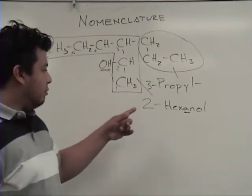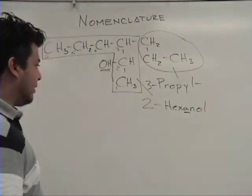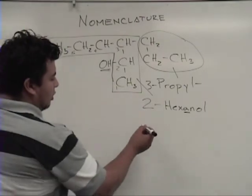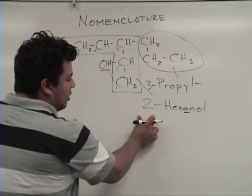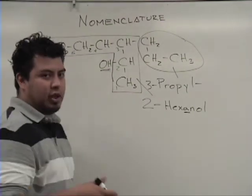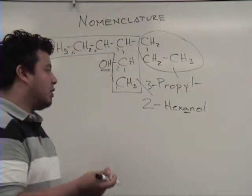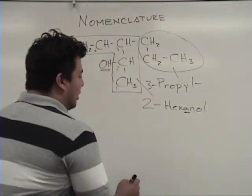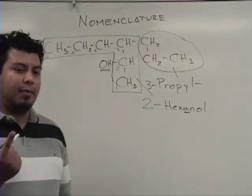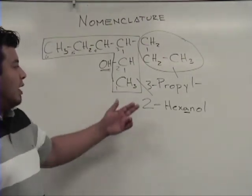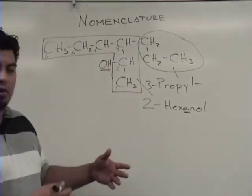The rule between dashes and commas: you're going to use a dash between numbers and letters — whenever you transition from numbers to letters, or from letters to numbers, you use a dash. The comma is used whenever you have more than one number — if you want to say three, three, you use three comma three; or two comma two.